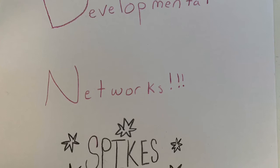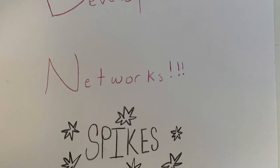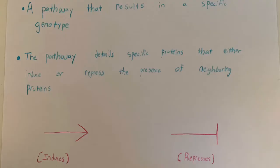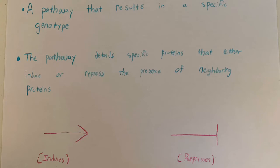Today's video is on developmental networks, specifically the hypothetical network of creating spikes in spiny beetles. A developmental network is a pathway that results in a specific genotype. The pathway details specific proteins that either induce or repress the presence of neighboring proteins.